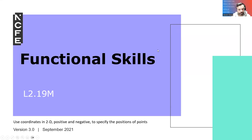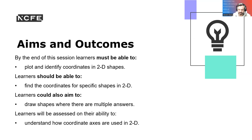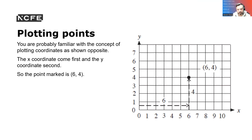Hello and welcome to session 19 of your maths. We're going to look at coordinates in 2D positions and use negatives to specify the positions of points. So if you've done map reading in the past you're going to find this a breeze. So we've got our aims and outcomes: by the end of this session learners must be able to plot and identify coordinates for 2D shapes, find coordinates on a specific shape, draw the shape where there are multiple answers, and understand coordinate axes to use 2D shapes.